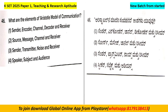The first question is: what are the elements of Aristotle's model of communication? Option A: Sender, Encoder, Channel, Decoder and Receiver. Option B: Source, Message, Channel and Receiver. Option C: Sender, Transmitter, Noise and Receiver. Option D: Speaker, Subject and Audience.